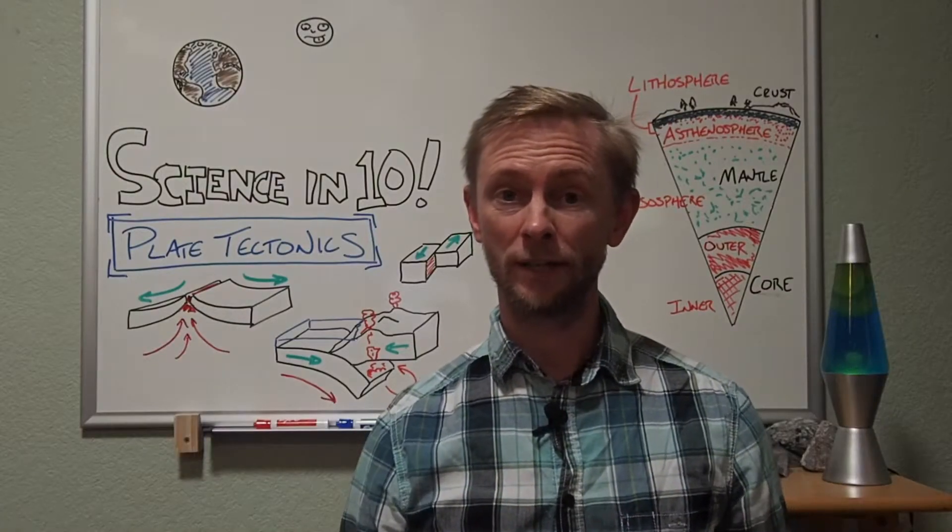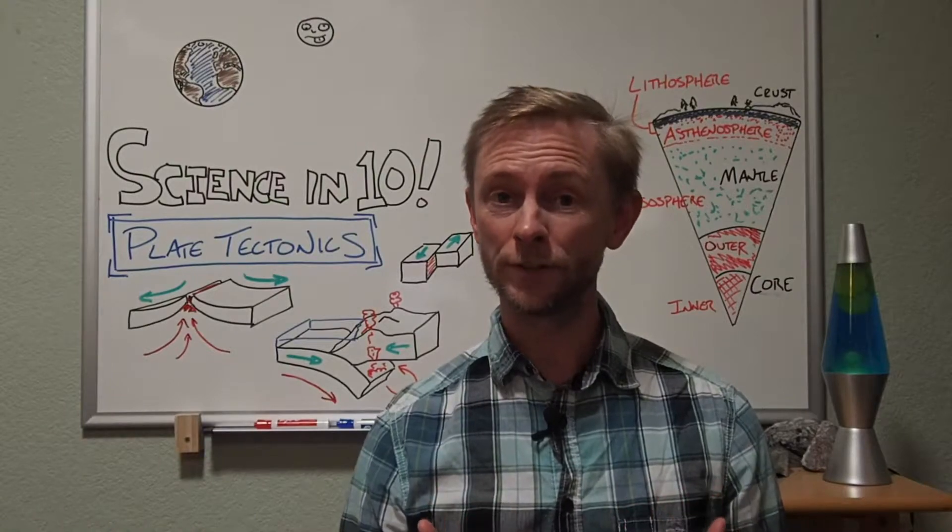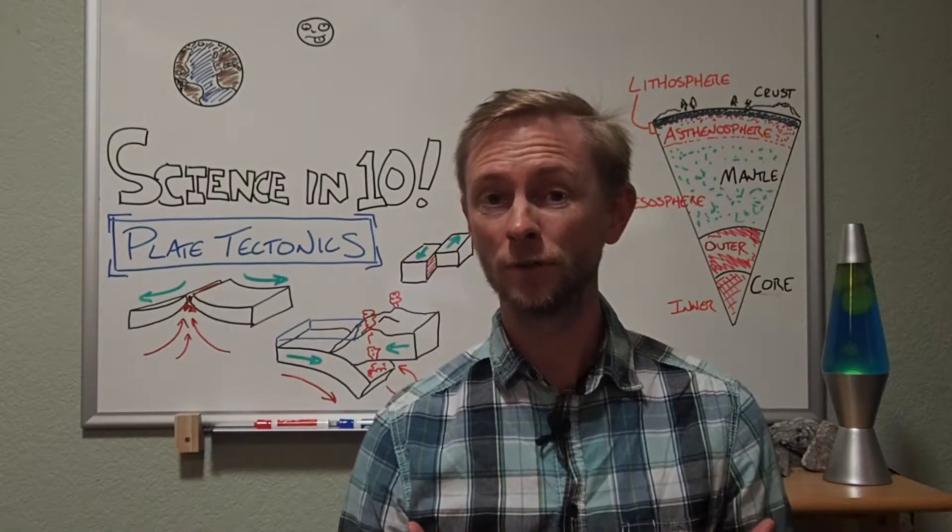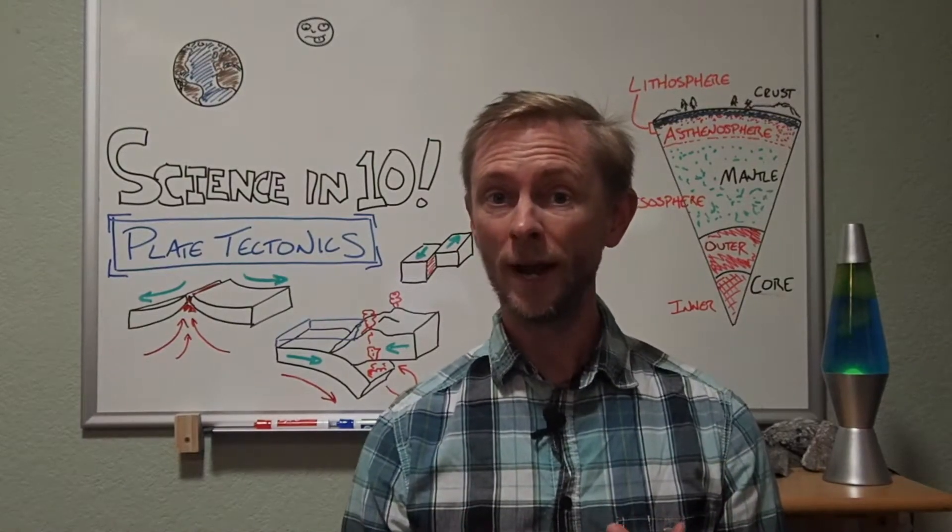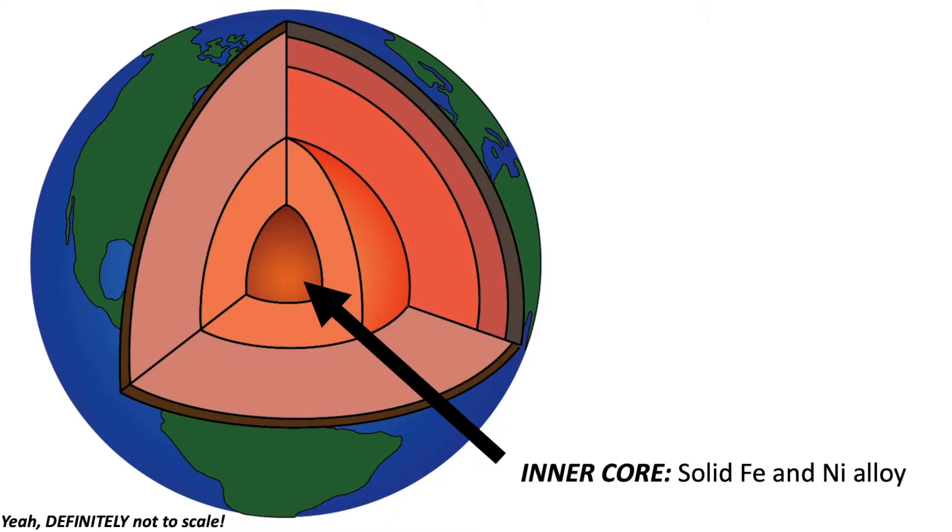Another way to classify layers of the Earth's interior is by their physical properties or how the layers behave or move. Starting at the very center, we have the inner core. The inner core is a solid ball of iron and nickel.